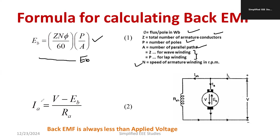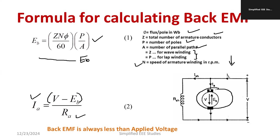We can also compute the armature current. Armature current is the difference between terminal voltage and back EMF, divided by armature resistance. This figure represents the shunt motor. Here you can calculate Ia: Ia = (V − Eb) / R. It is very clear that the back EMF and the applied voltage are entirely opposite to each other.